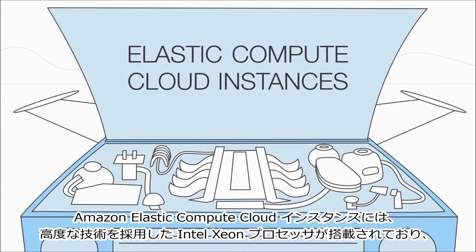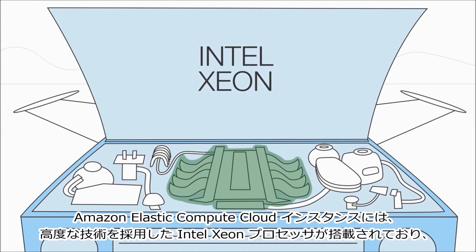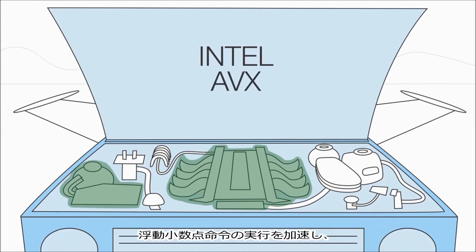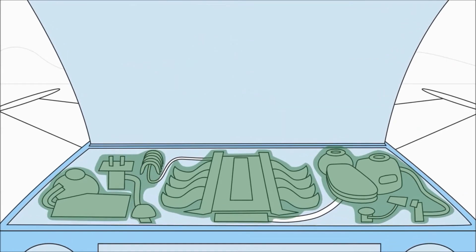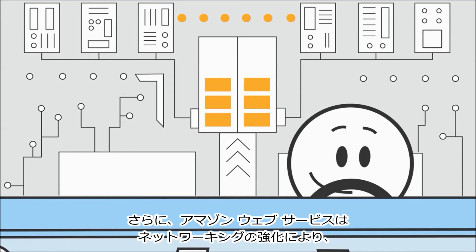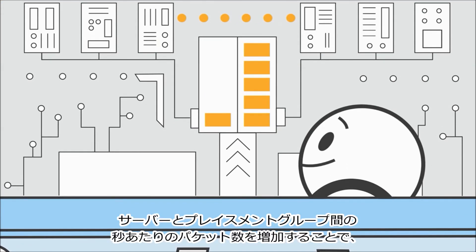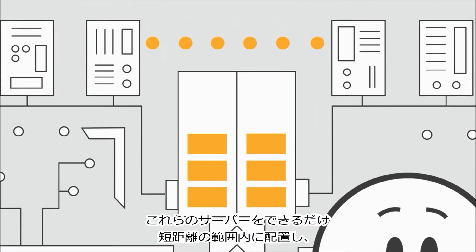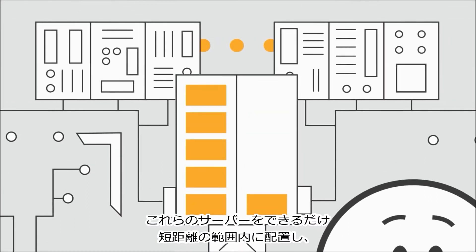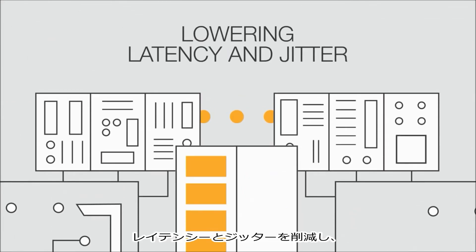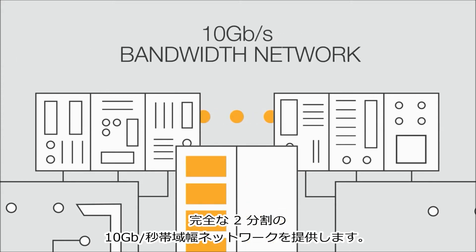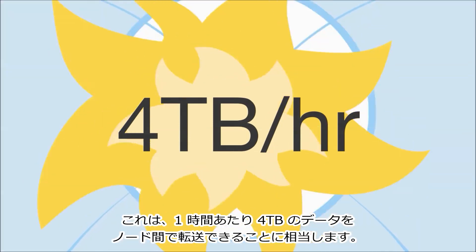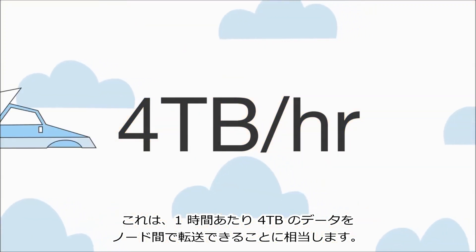Amazon Elastic Compute Cloud instances have Intel Xeon processors with advanced technologies to accelerate floating point instruction execution, encrypt data for enhanced security, and boost the processor clock rate for peak loads. Additionally, Amazon Web Services provides enhanced networking, which increases the number of packets between servers and placement groups to ensure those servers are located as close together as possible, lowering latency and jitter, and providing full bisection, 10 Gbps bandwidth network, enough to transfer over 4 terabytes of data between each node every hour.